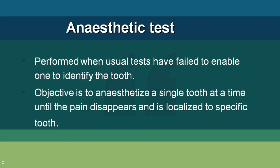The anesthetic test is another last-resort test that assesses the neural supply when all other tests have failed. We anesthetize teeth one by one using intraligamentary infiltration to identify the culprit tooth. For example, if the patient has pain in the lower right jaw, we start from premolar 4, then 5, then 6 — when the pain is relieved after injecting tooth 6, that tooth is identified as the culprit.